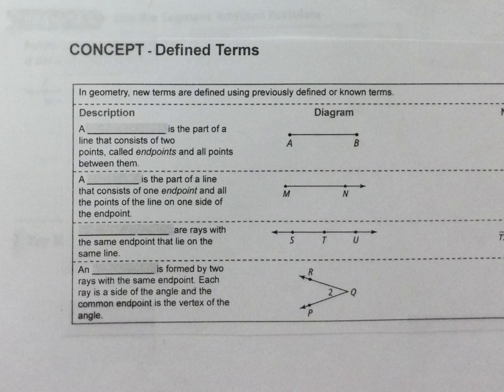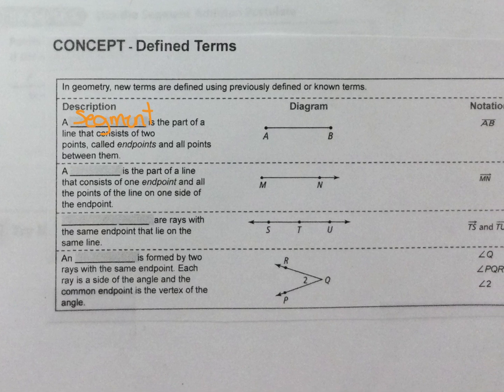Now we have defined terms, everything else is defined. So we're going to start with these. A segment is the part of a line that consists with two points called endpoints and all points between them. So you can see the notation doesn't have the arrows on it.